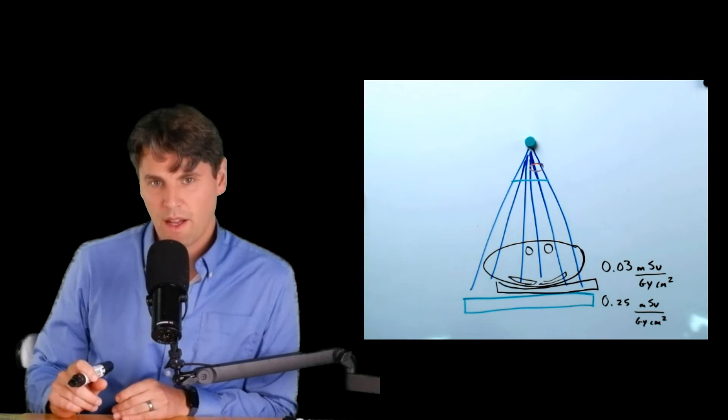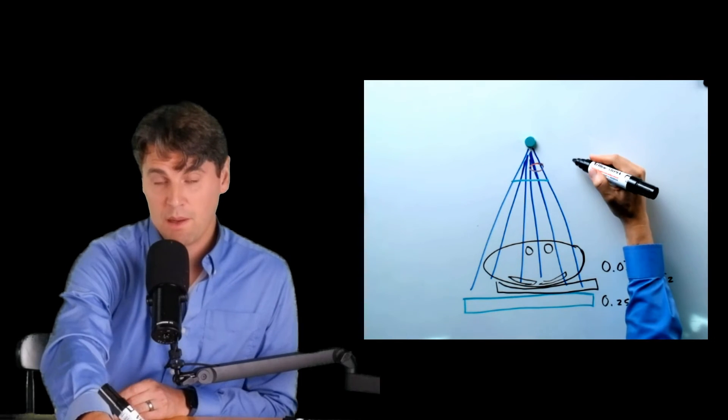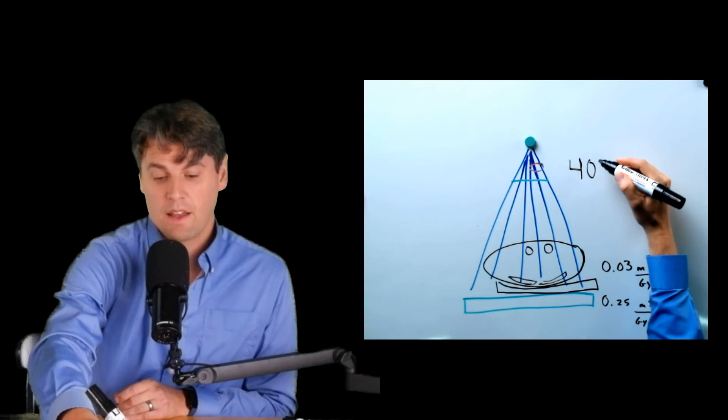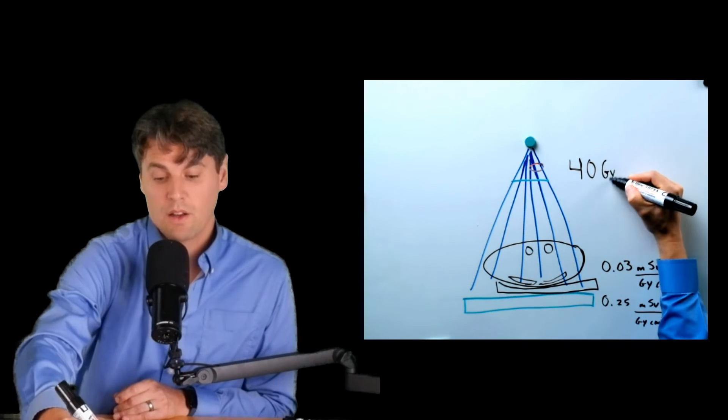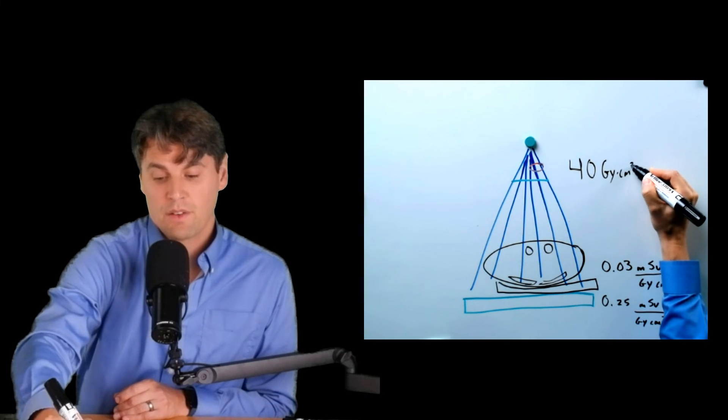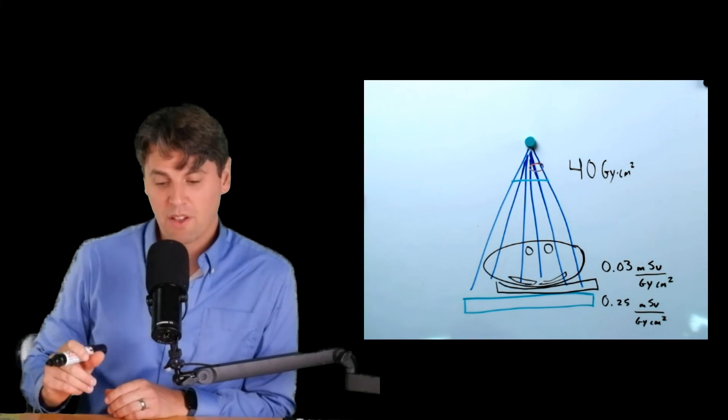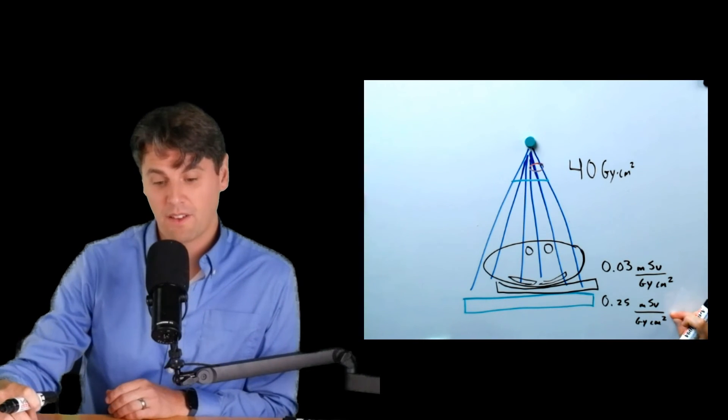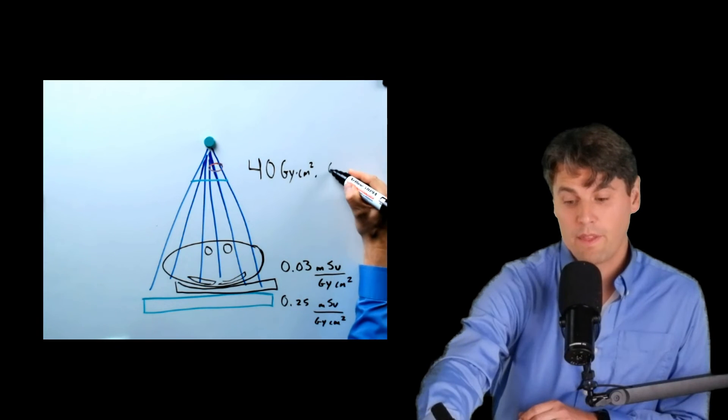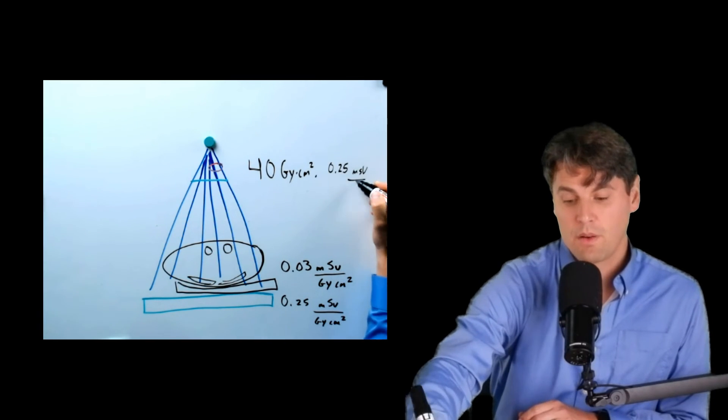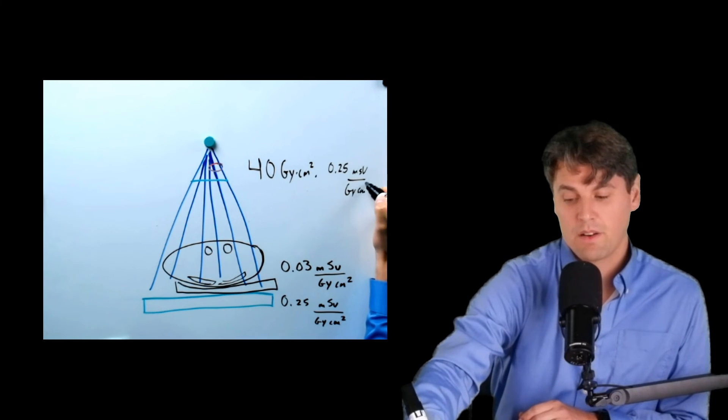Imagine that you had the question that there was a barium enema that was performed. And during the barium enema, you had a Kerma area product that was 40 gray centimeter squared. What's the approximate effective dose for this exam? If it's an adult patient, we can then use this conversion factor here, we can multiply this times our 0.25 millisieverts per gray centimeter squared.